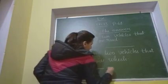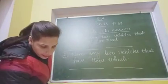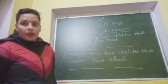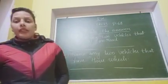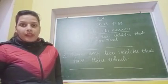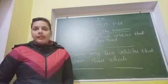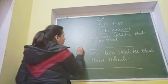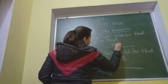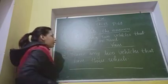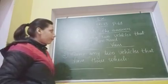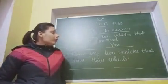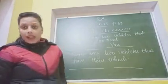So for the first question — Name any two vehicles that you see on the road — what are the two vehicles? One is car and another is van. Answer is cars and vans. So car and van are road-based vehicles. Write only car or van.